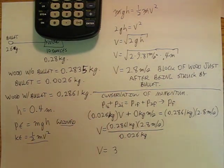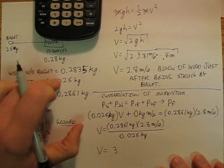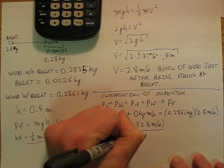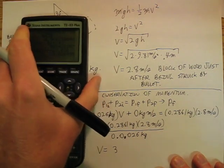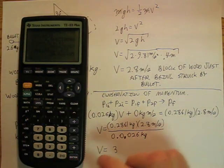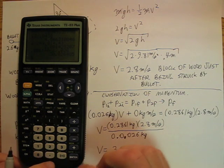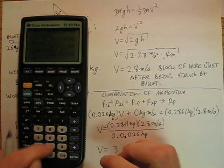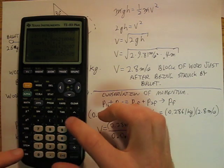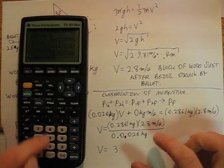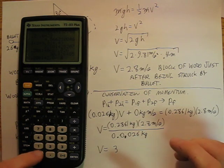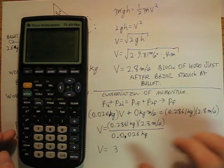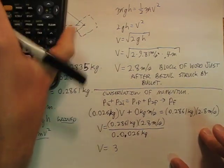Oh, and I see what I did wrong. Mass of the bullet - there's another zero on there. So I've got to go back and recalculate: 0.2861 times 2.8 divided by 0.0026, and that's 308 meters per second.